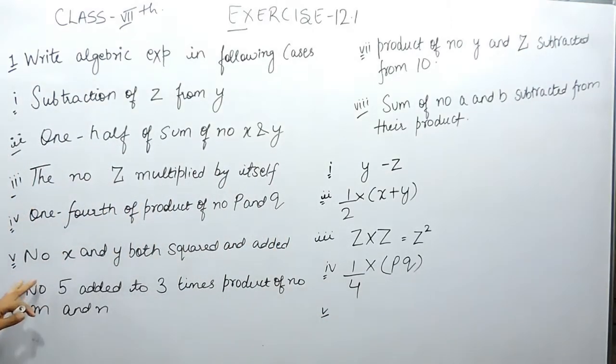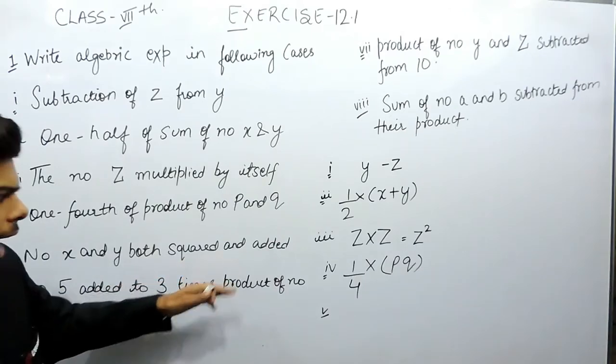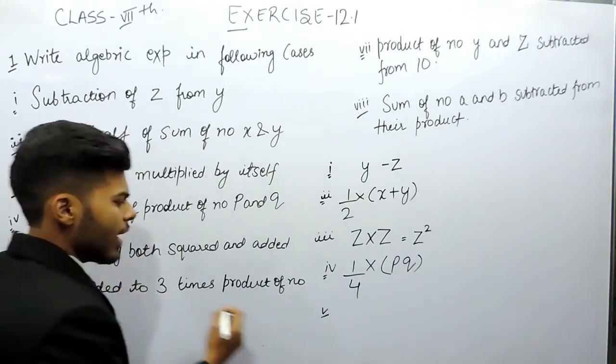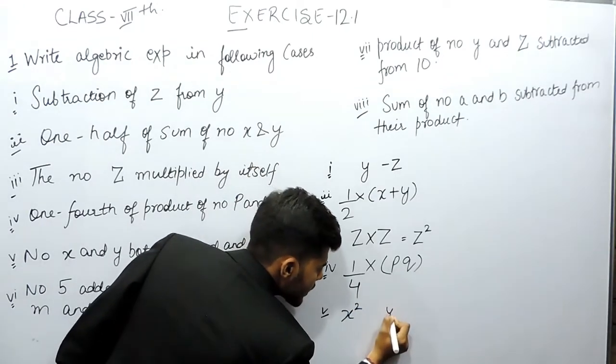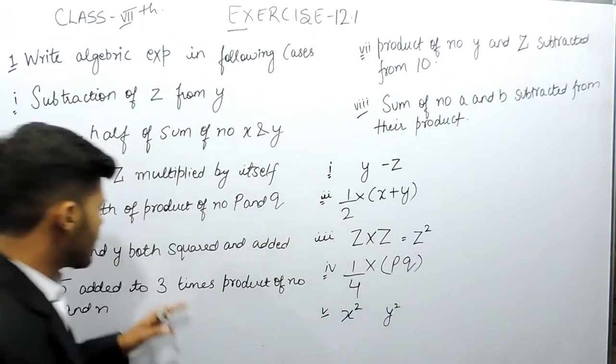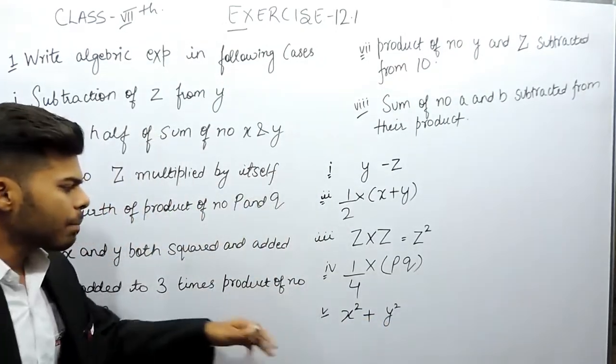Now part 5. Number x and y both squared and added. So what is the square of x? That will be x square. The square of y? That will be y square. And they both are squared and added, that's why we'll have a plus sign there.